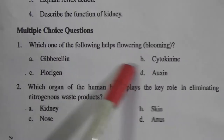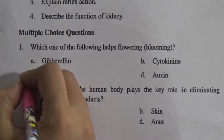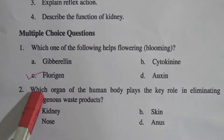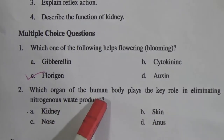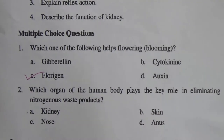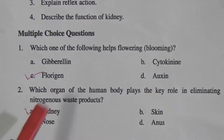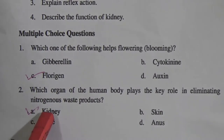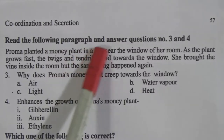Now we will look at the MCQs. The first MCQ: which one of the following helps flowering? The options are gibberellin, cytokinin, florigen, and auxin. We know florigen helps in flowering, so the answer is florigen. The second MCQ: which organ of the body plays the key role in eliminating nitrogenous waste products? The options are kidney, nose, skin, and anus. The main excretory organ is the kidney — it produces urine through which most nitrogenous waste products come out from our body.